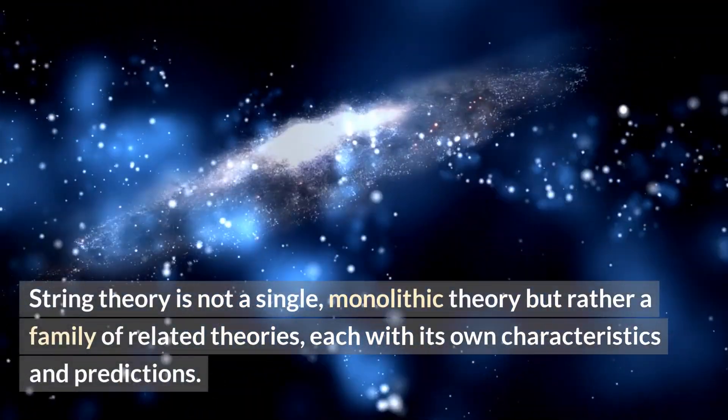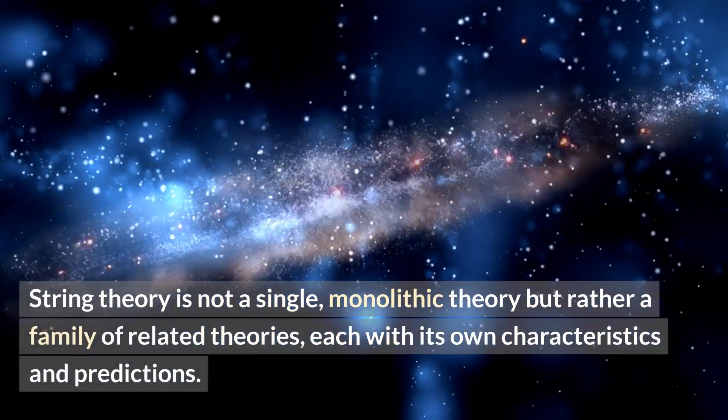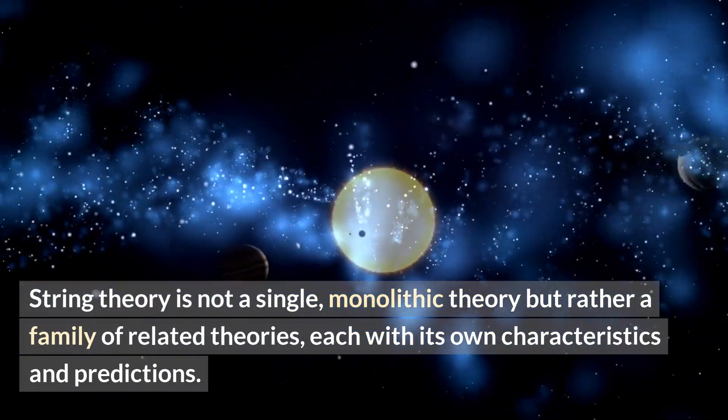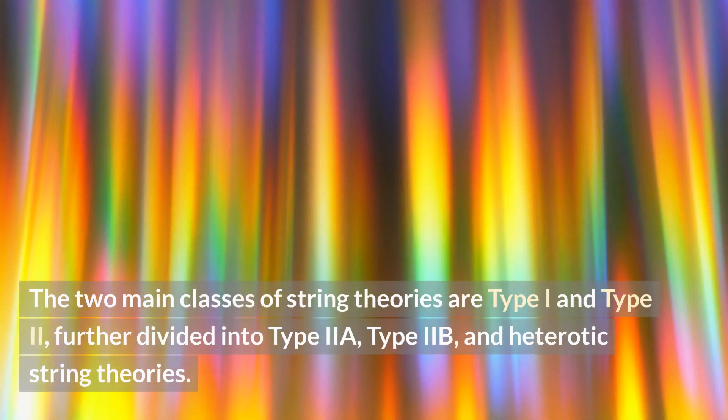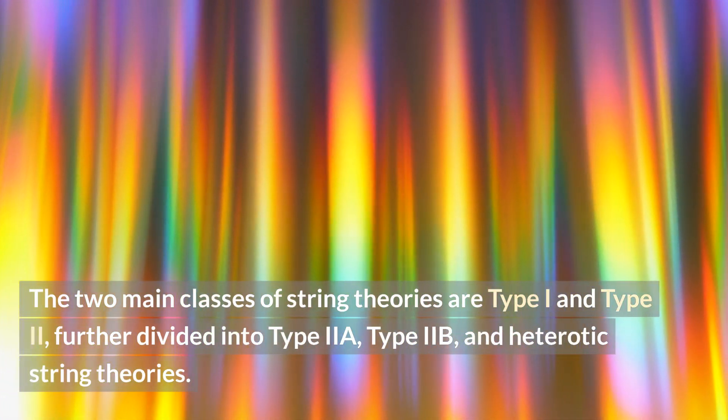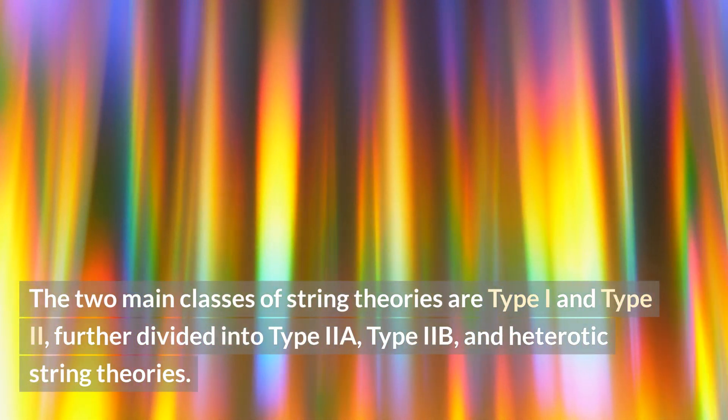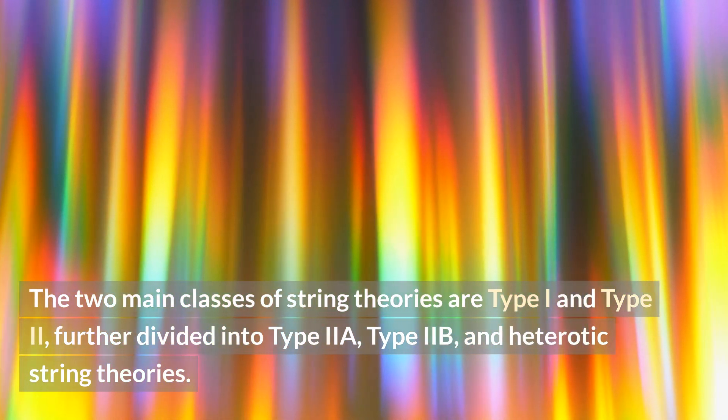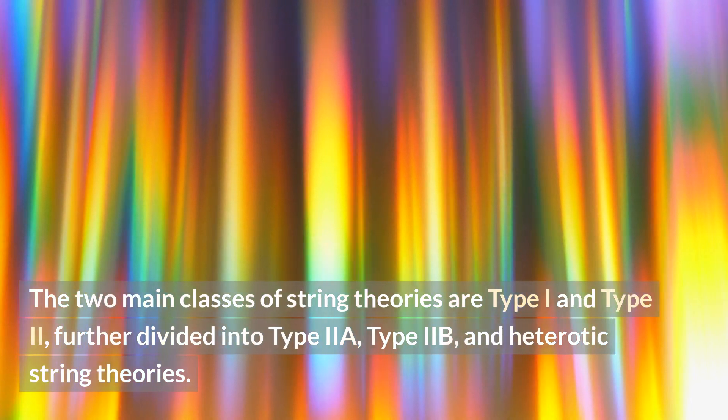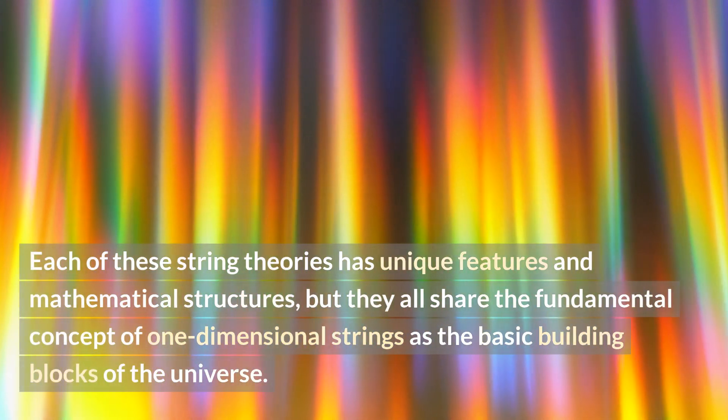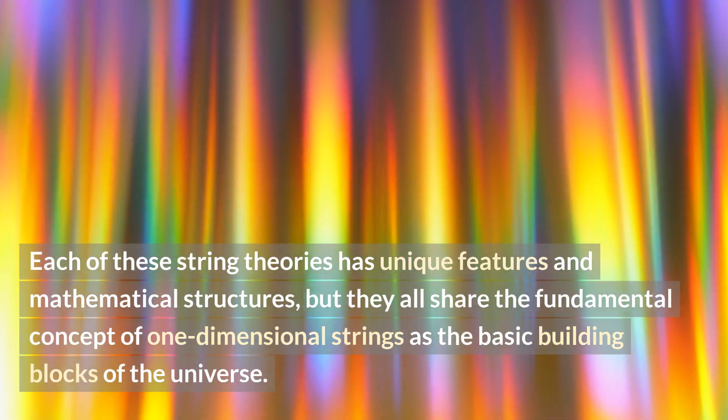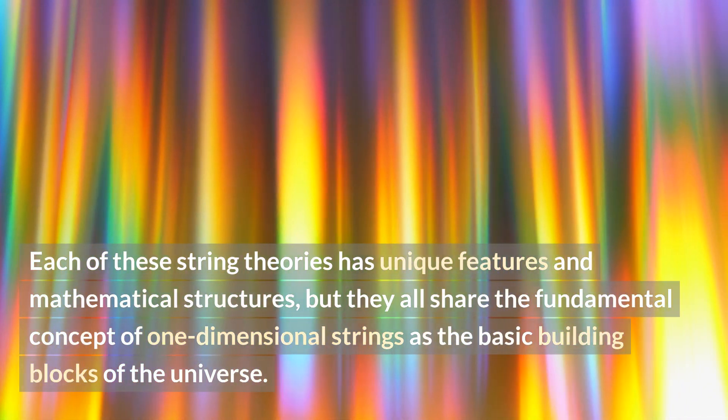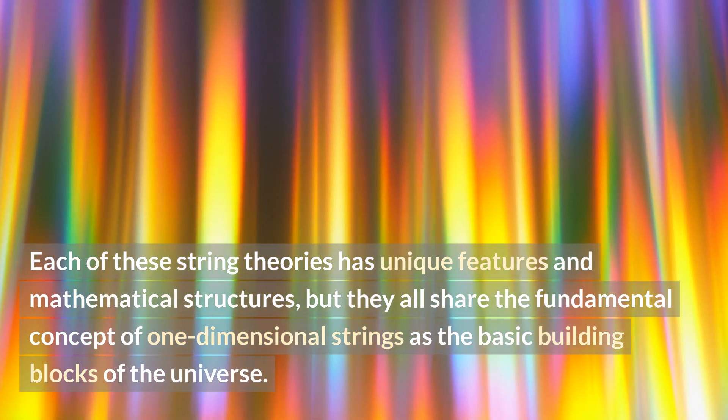String theory is not a single monolithic theory but rather a family of related theories, each with its own characteristics and predictions. The two main classes of string theories are Type 1 and Type 2, further divided into Type IIA, Type IIB, and heterotic string theories. Each of these string theories has unique features and mathematical structures, but they all share the fundamental concept of one-dimensional strings as the basic building blocks of the universe.